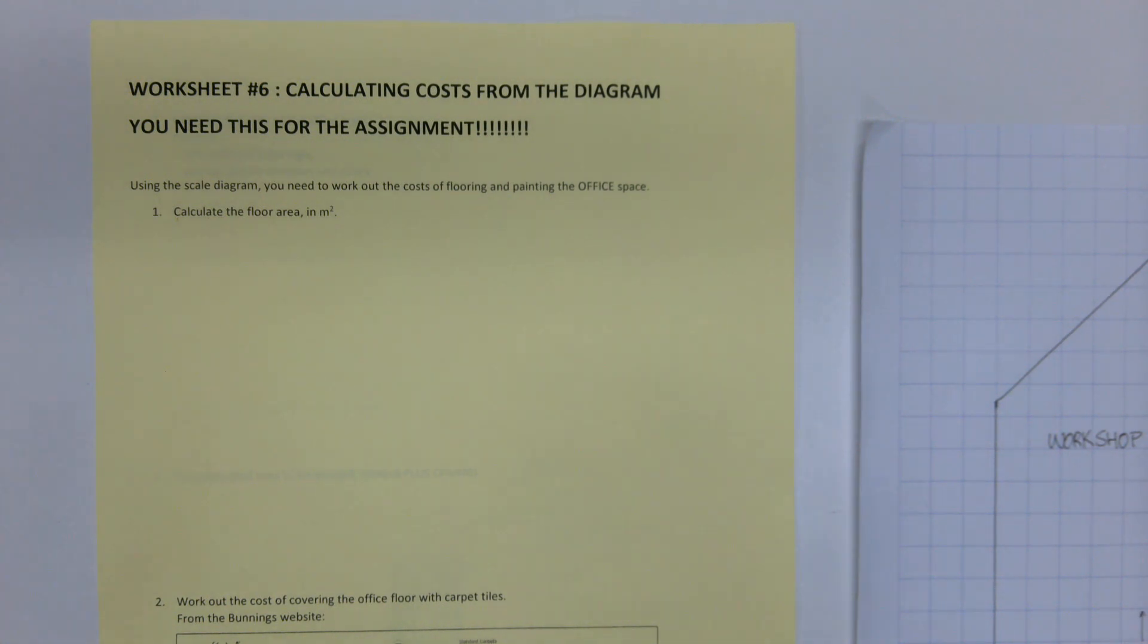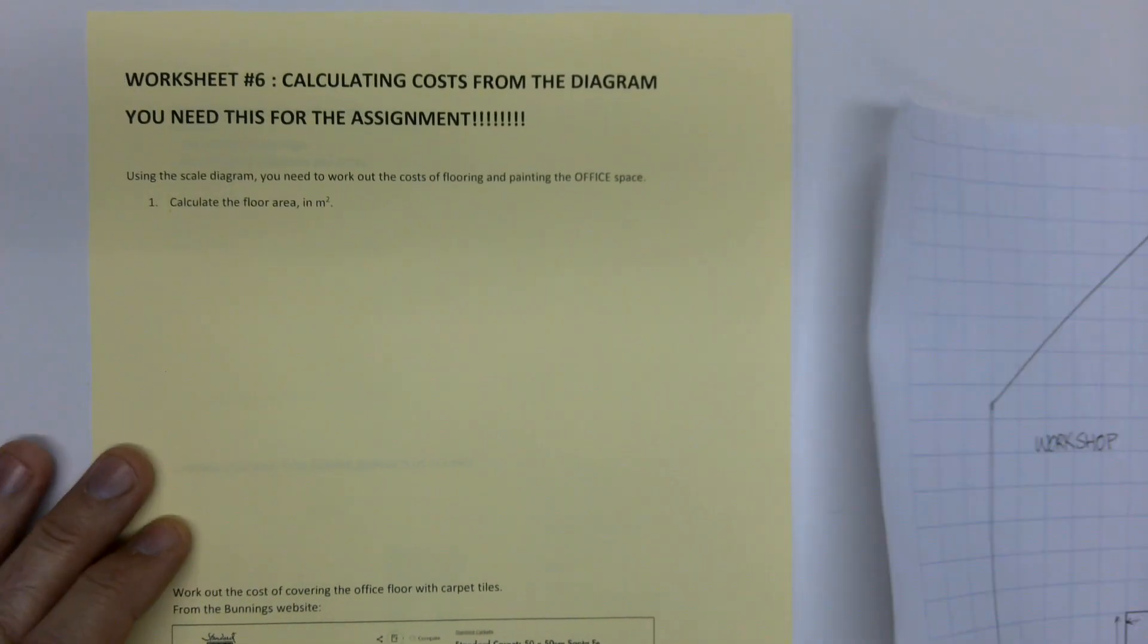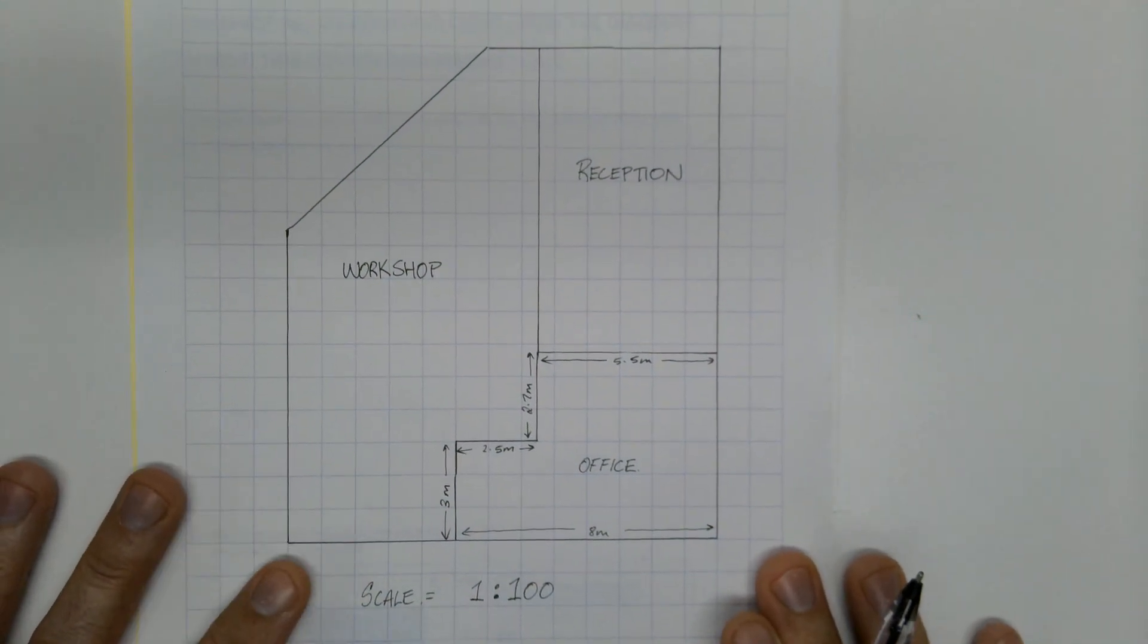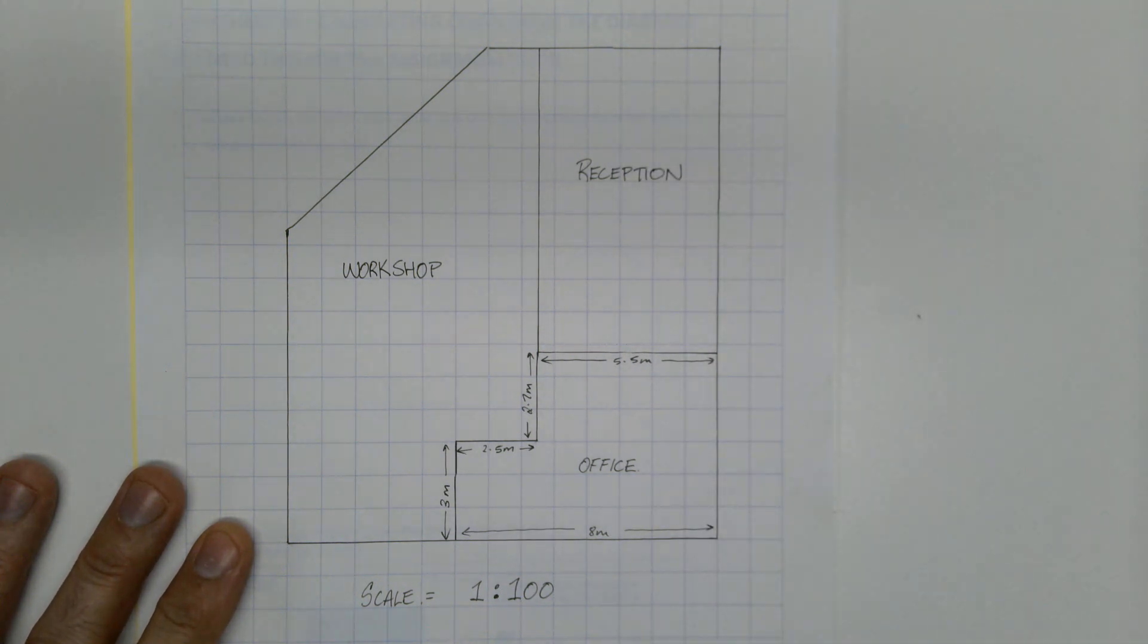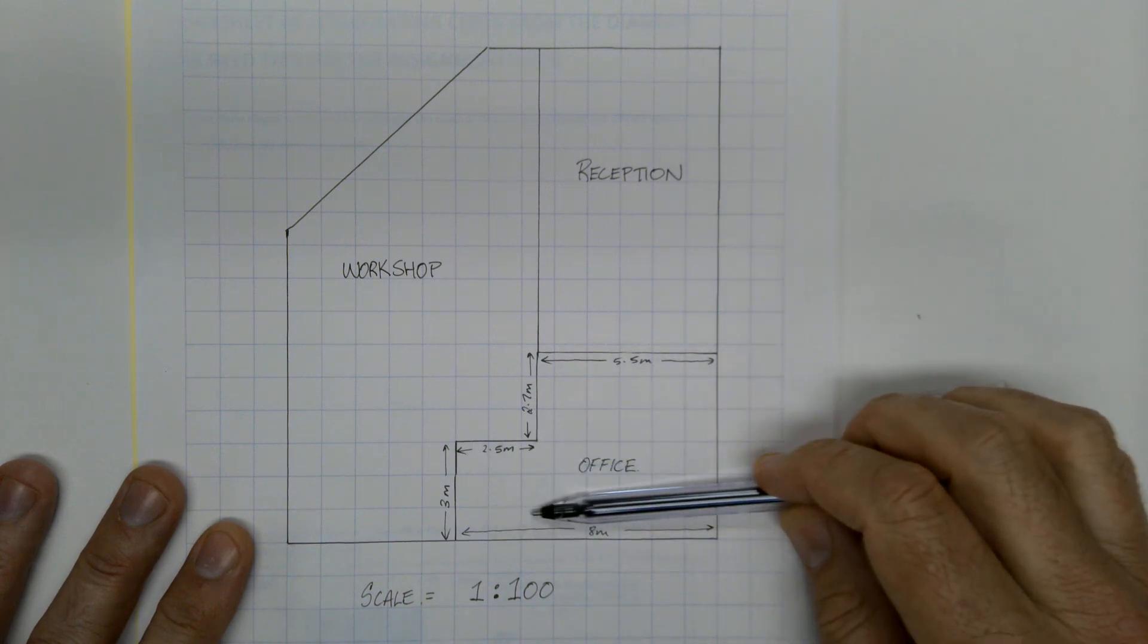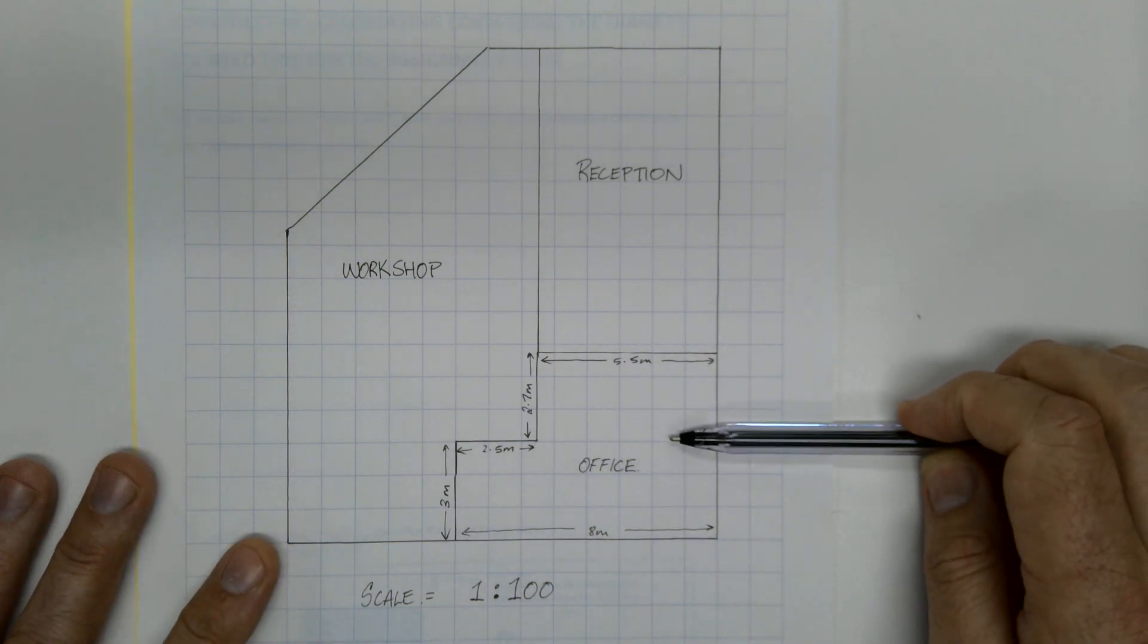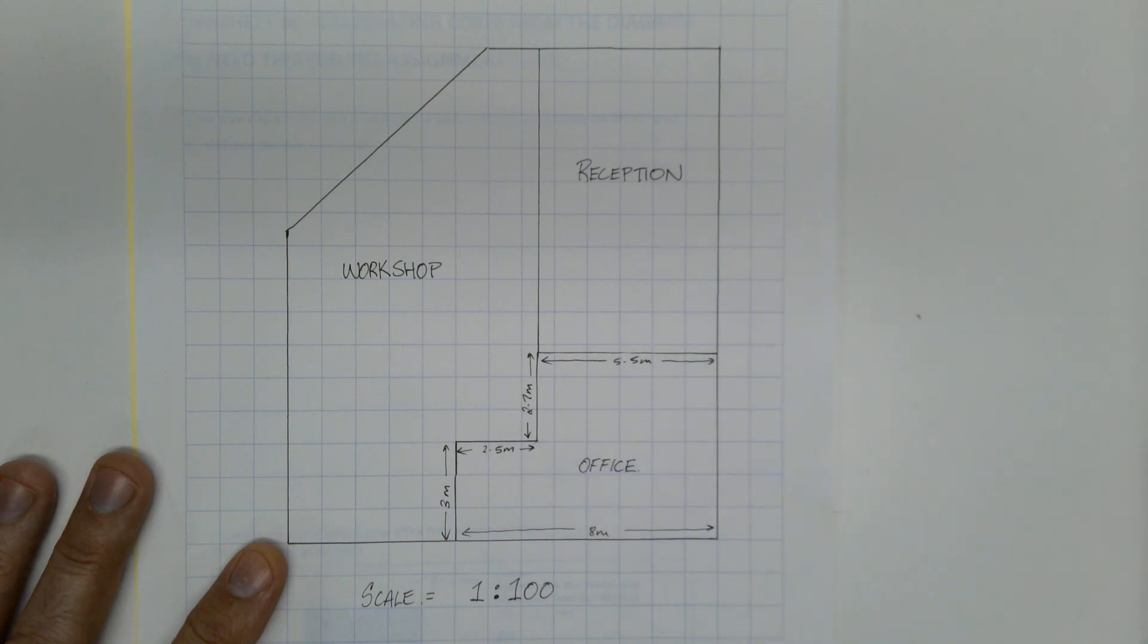So you're going to fill this yellow sheet out as you watch this video. Let's say this is your design, that's the one that's 100. You've already got something like this, it should be in your purple folder. And you need to pick a section, an enclosed section. So let's say I'm going to pick this office here, and I'm going to look at the cost of flooring it and then painting the walls and the ceiling.